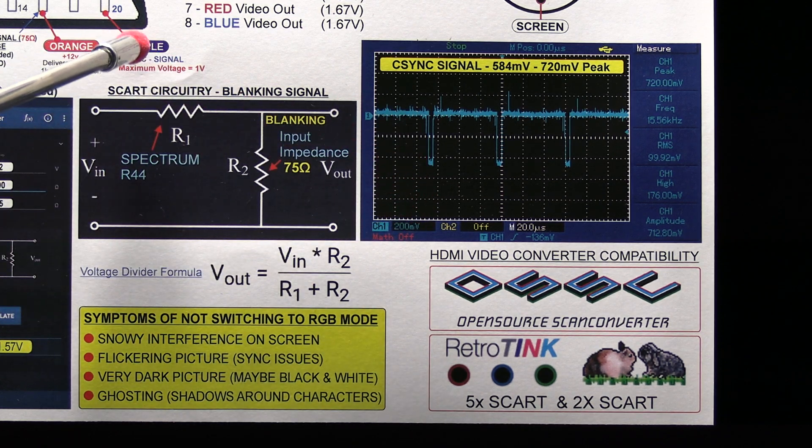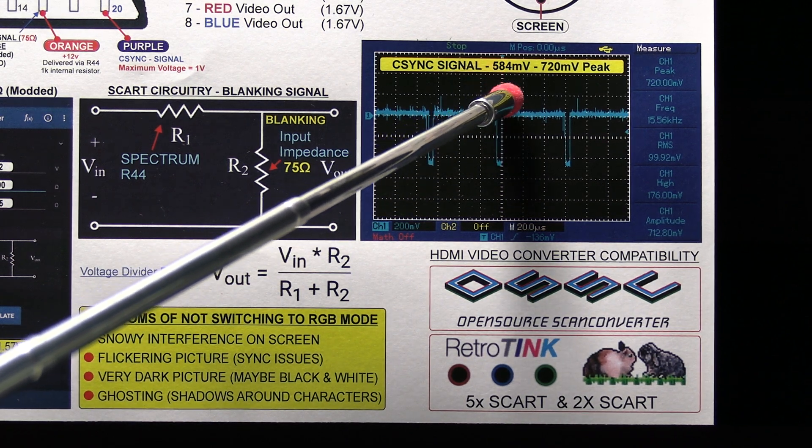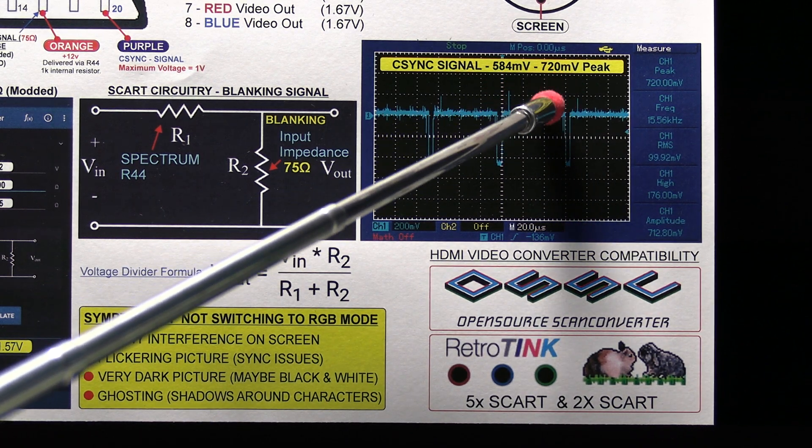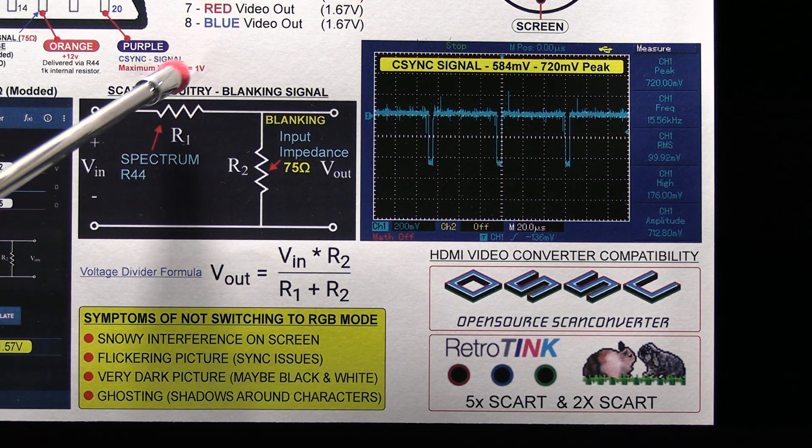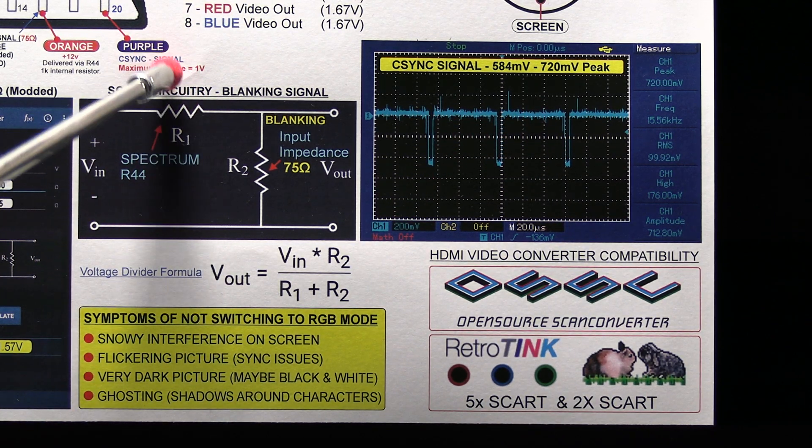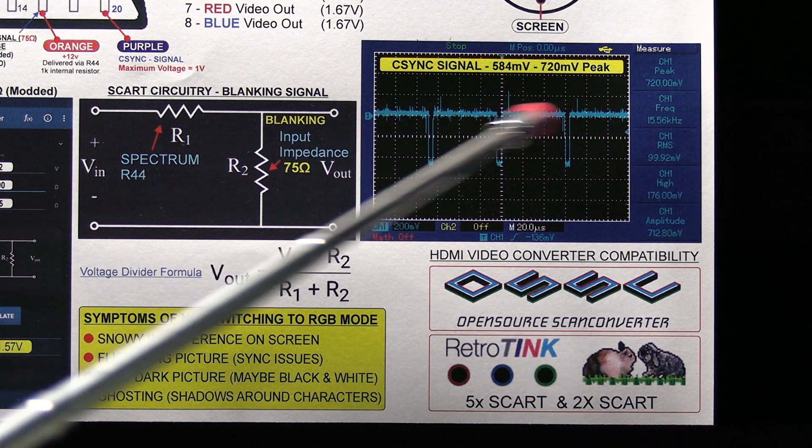The CSYNC signal on pin 20 is at a voltage of about 584 millivolts to around 720 millivolts. The maximum signal level for the synchronized or CSYNC signal is 1 volt. So this is well within that range.